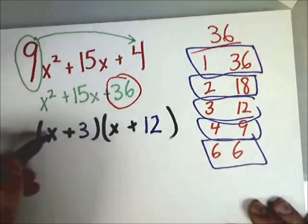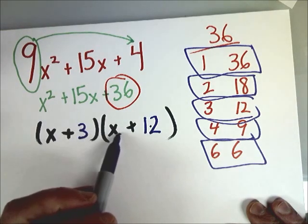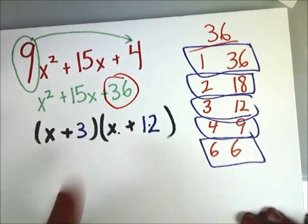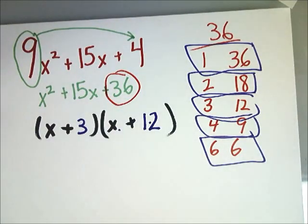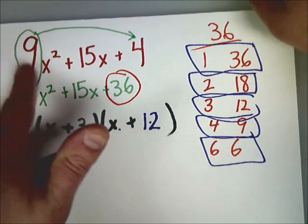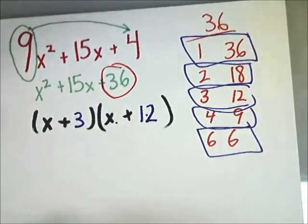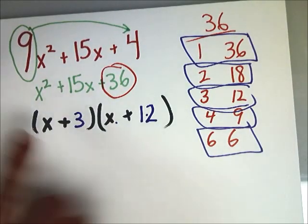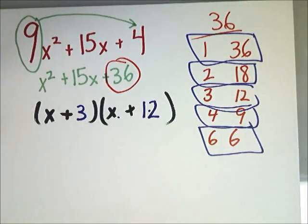That gives me 15, so I know my answer for that part is 3 and 12. And if you wanted to check your work, you could go back and do x times x is x squared. x times 12 is 12x. 3 times x is 3x. So 12 plus 3x gives me 15x, and then 3 times 12 gives me 36. So that works it back out almost as far as I need it to go.